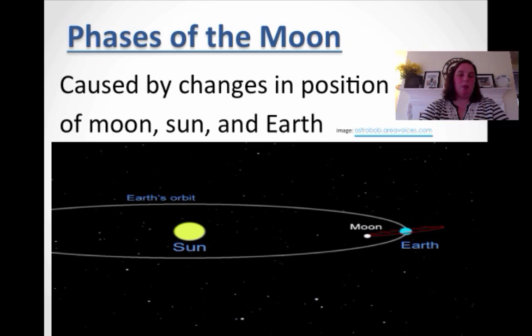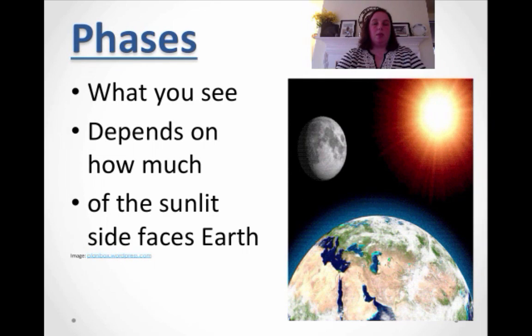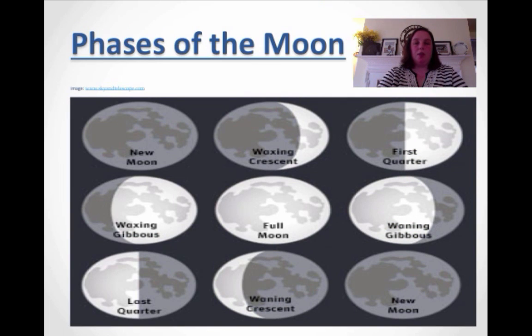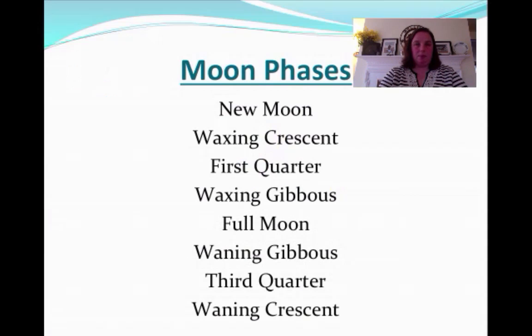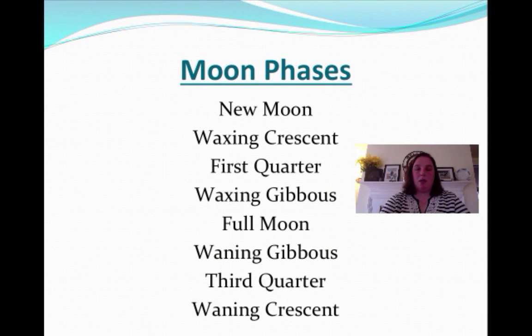So what causes the phases of the moon? Well, it's caused by the change in positions, like we said earlier, of the sun, moon, and earth. So the phase, what you see, depends completely on how much of the sunlit side faces earth. So if you haven't drawn yourself a diagram yet of these, I would absolutely do that.